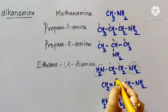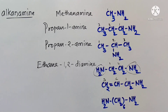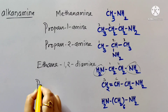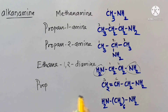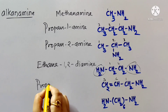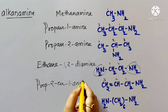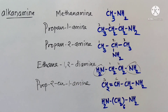For a three-carbon chain with a double bond, the parent is propene (propenamine). The double bond is at position two and the amino group is at position one, giving the IUPAC name prop-2-en-1-amine.